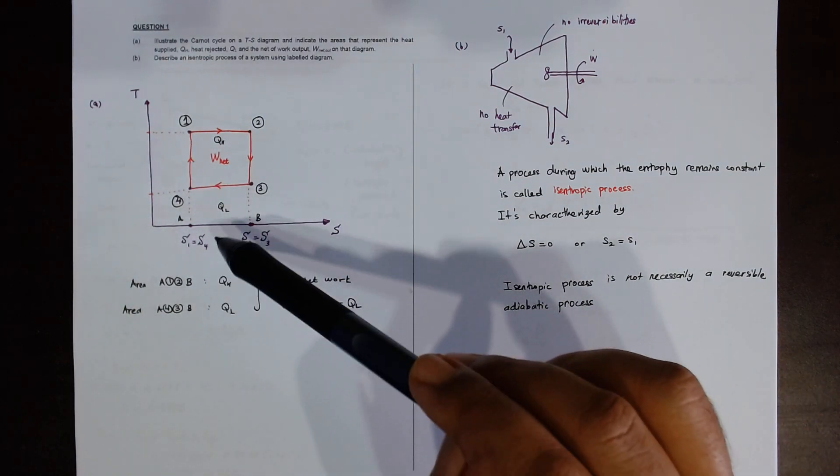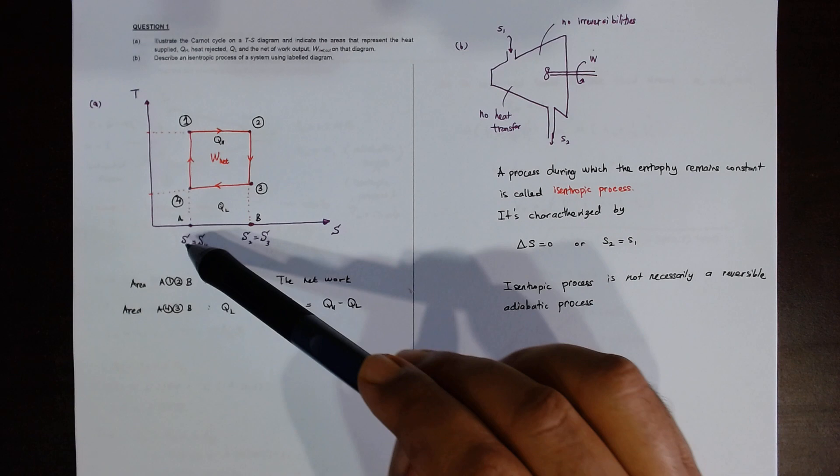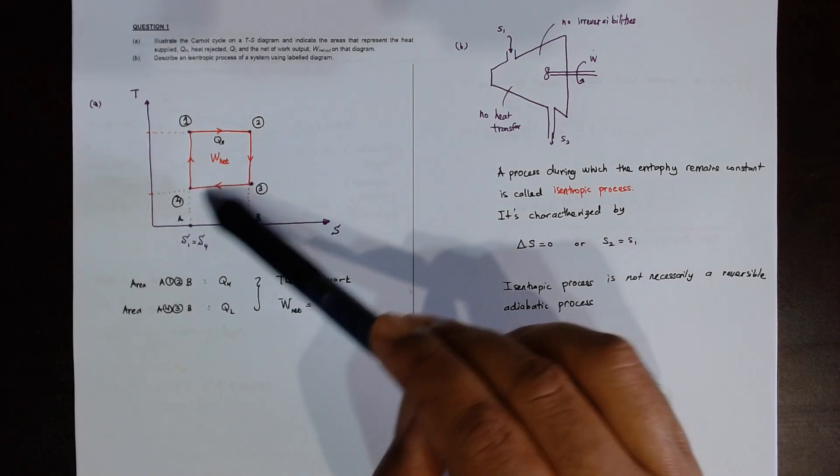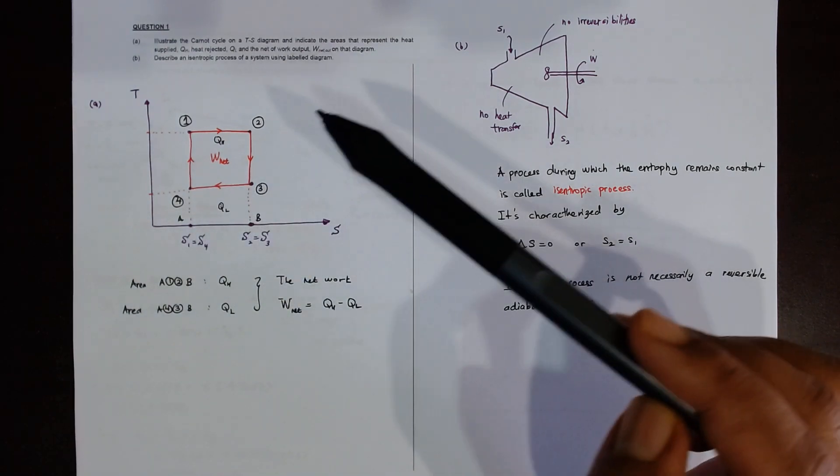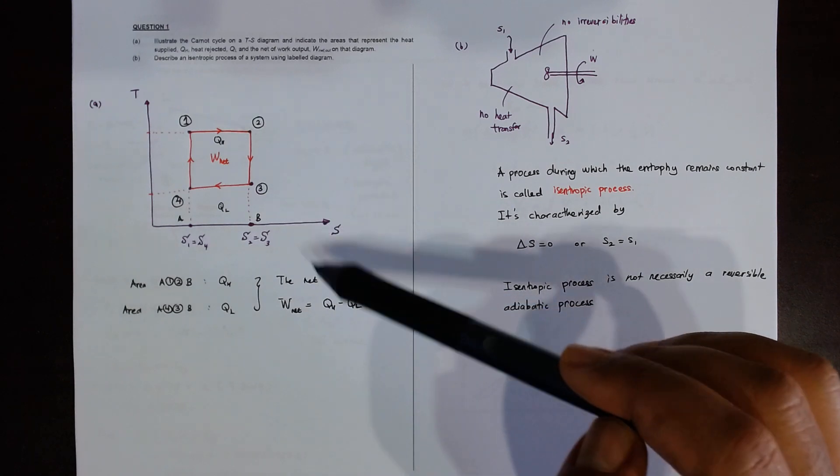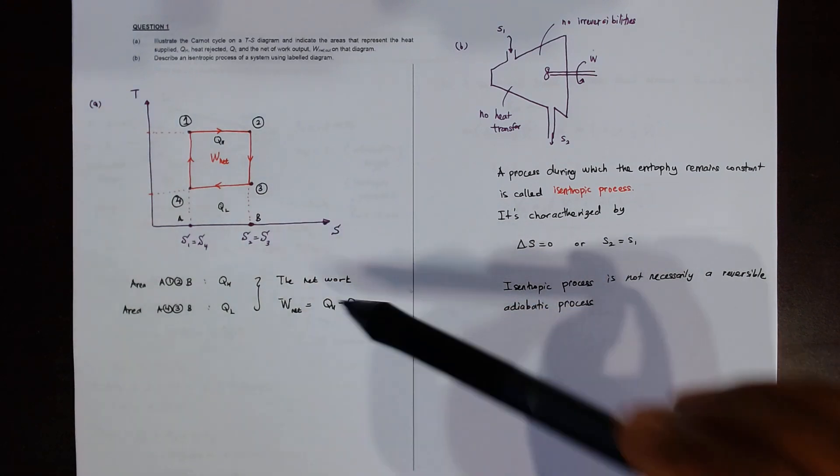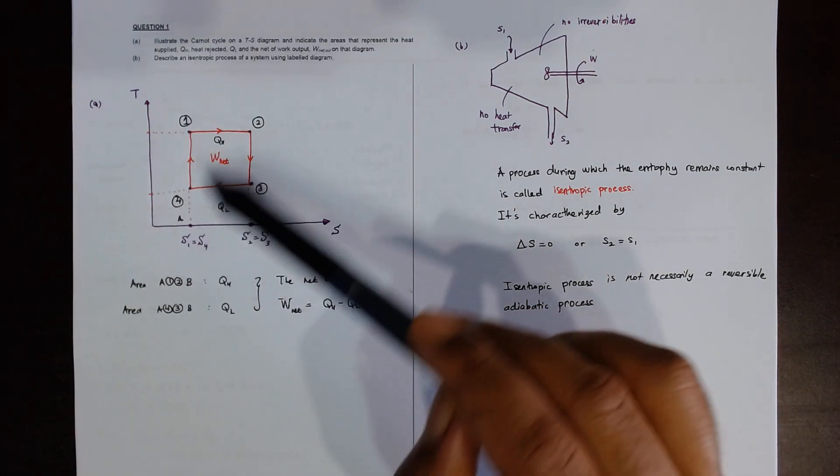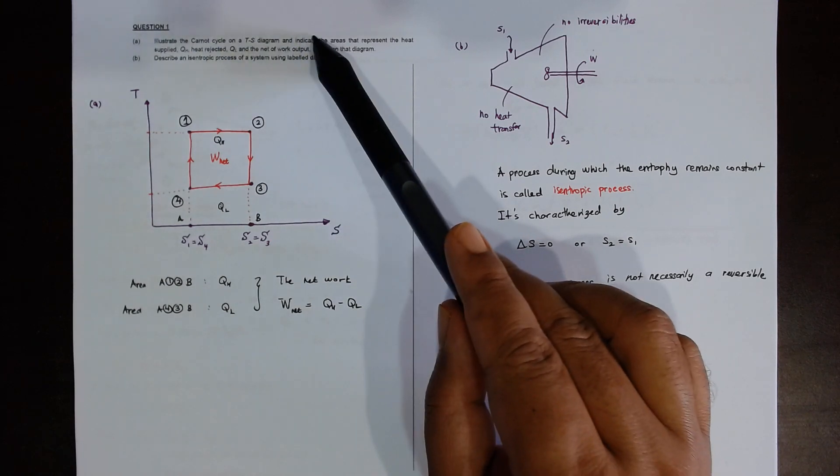And then for the QL dot is A 4 3 B A, 4 3 B, so this area is known as QL dot. Total work, the net work is what? QH minus QL dot. So we have answered question number 1.